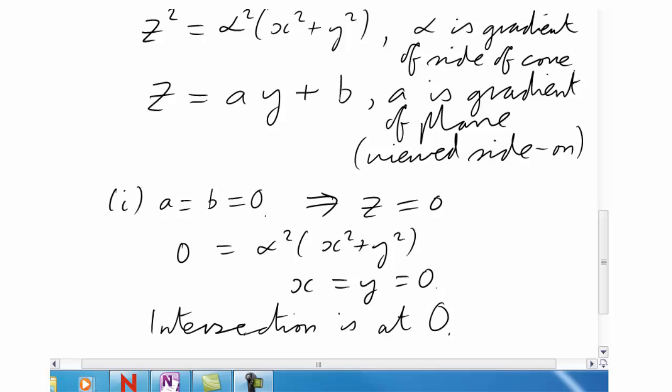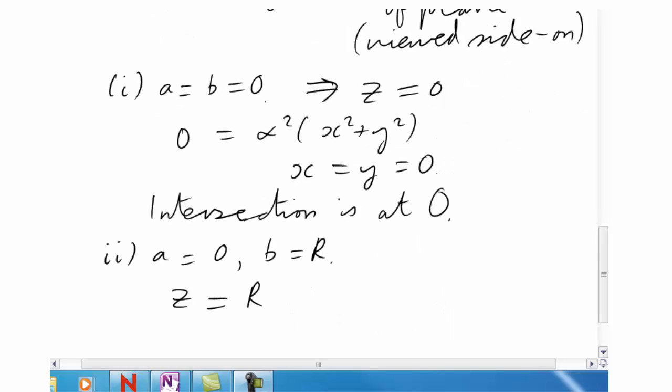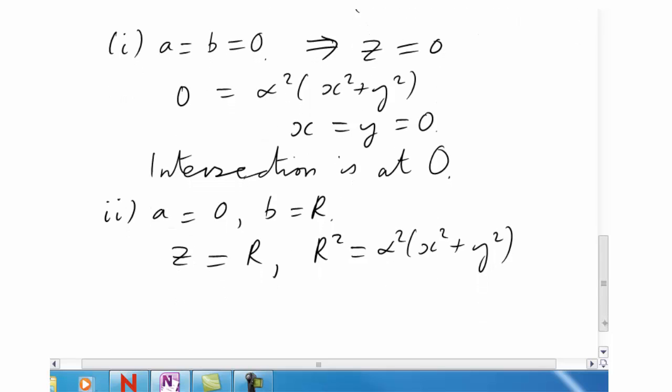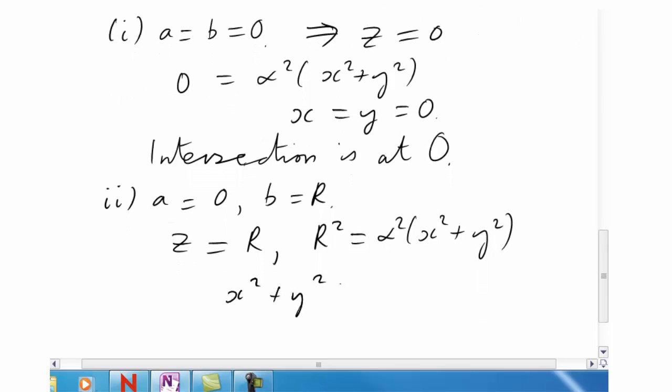Let's now look at the case where a is zero, but b is some constant, call it maybe capital R. In that case, we get z equals R. We have to substitute that into the cone equation. Here's the result. And, of course, we get circles in the xy-plane. x squared plus y squared equals R squared over alpha squared. They're circles of radius capital R over alpha. Do you remember we said circles were amongst our curves forming the conic sections? Well, there we are. We've now proved it.